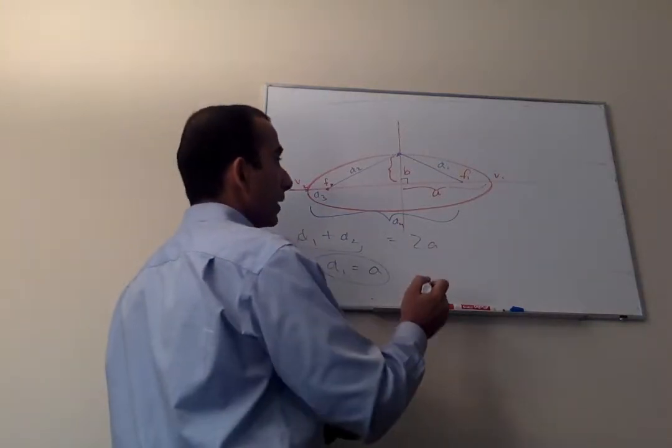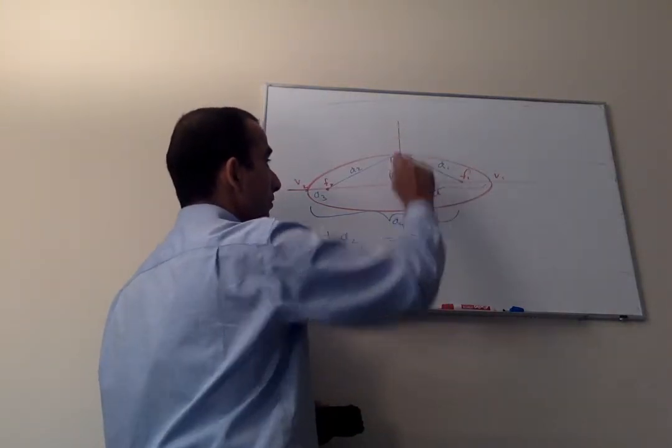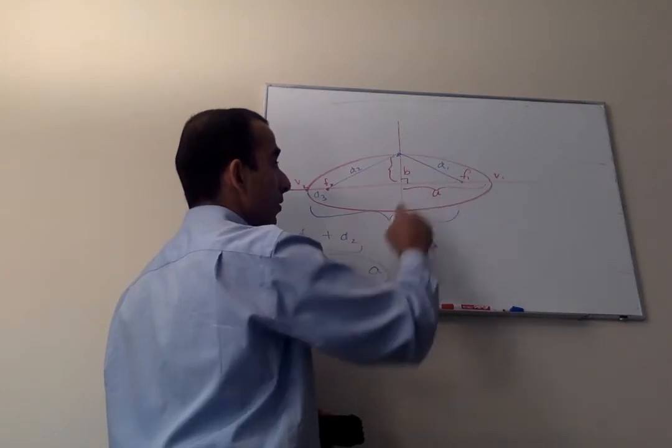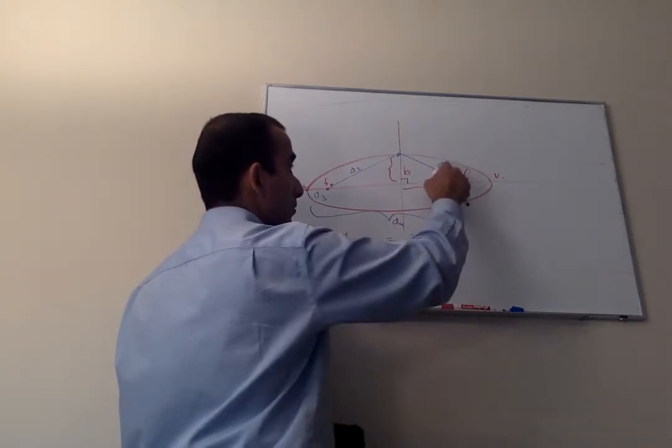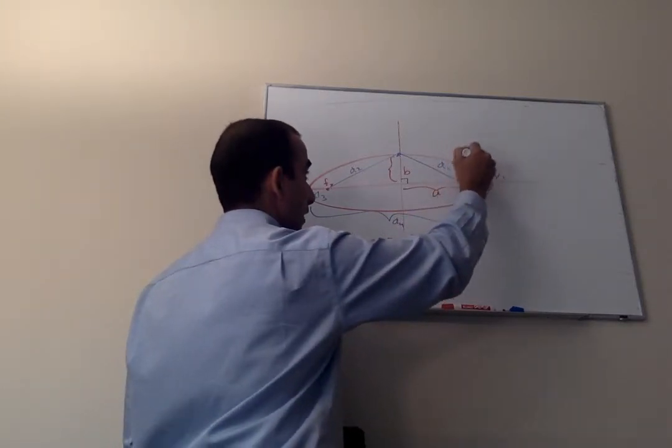So now we know that this is A, this is B, and D1 is also A. So I could just replace this, I could just write an A over there, D1 is A.